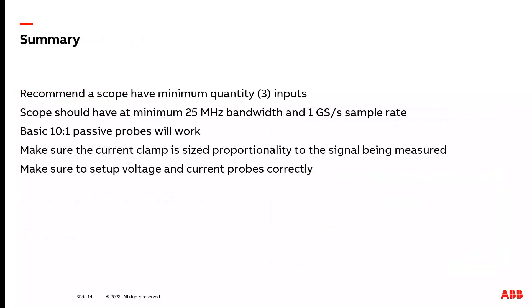Let's summarize what we discussed today. First, I recommend your scope have a minimum of quantity three inputs. This allows you to hook up, for example, three voltage probes all at one time during a lockout-tagout procedure, and then you can see all the individual waveforms in each phase without having to re-lockout-tagout your VFD to move voltage probes. Next, the minimum specifications I recommend your scope have are 25 MHz bandwidth and 1 Giga samples per second sample rate. This will allow you to see the fastest signal normally you'll be trying to check, which is the rise time on an IGBT.